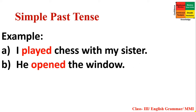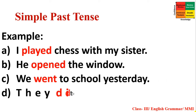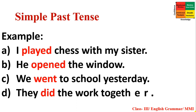Second example: 'He opened the window.' 'Opened' is the past form of 'open.' Third example: 'We went to school yesterday.' 'Went' is the past form of 'go.' Fourth example: 'They did the work together.' 'Did' is the past form of 'do.' So for Simple Past Tense, we have to use the past form of the verb.